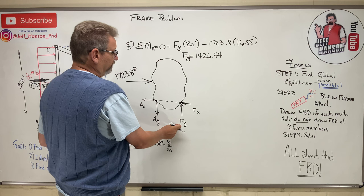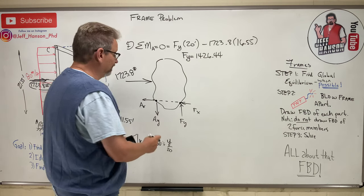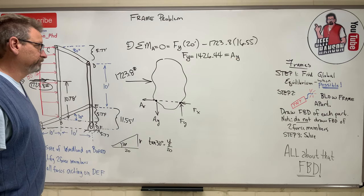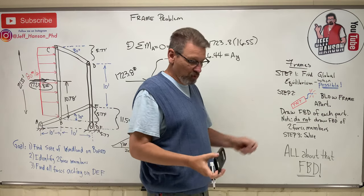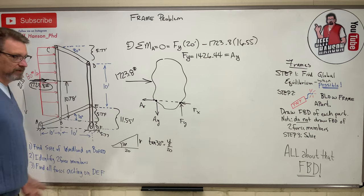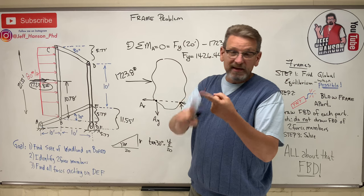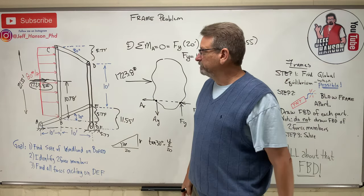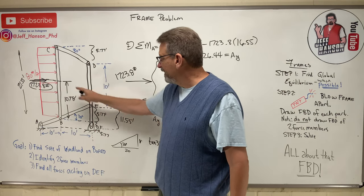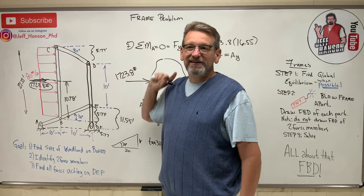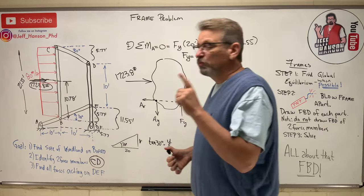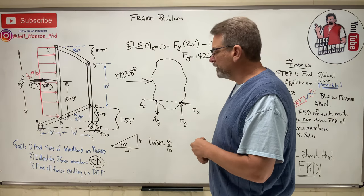From this free body diagram, Fy equals Ay since the upward forces must equal the downward forces — so Ay = 1426.44 lb. Now for step two: drawing free body diagrams of the pieces. A two-force member is pin-connected at both ends with no forces in the middle. Looking at the frame, member CD is the only two-force member — so we won't draw a picture of it separately.